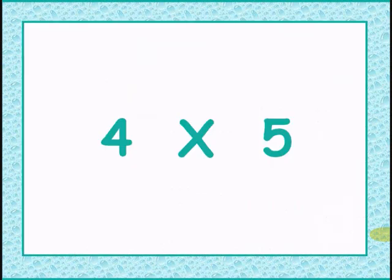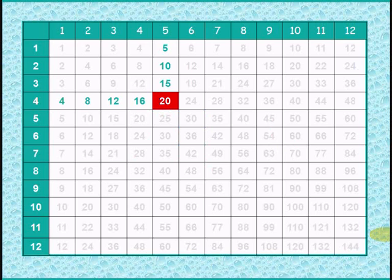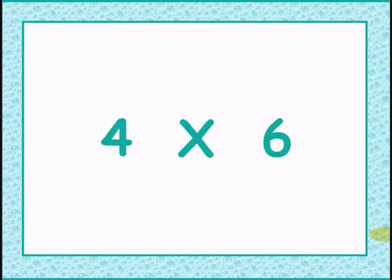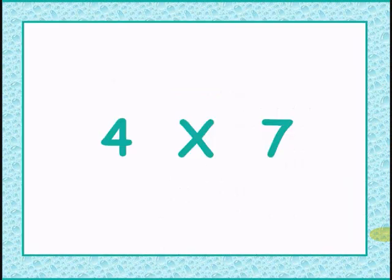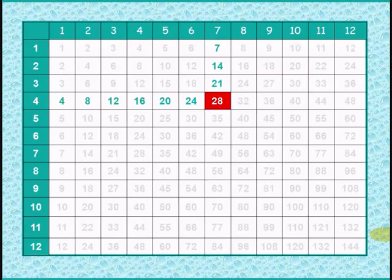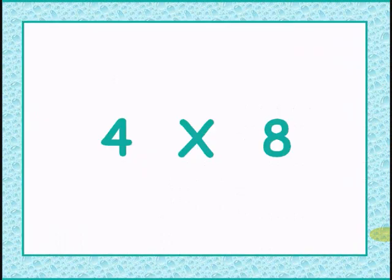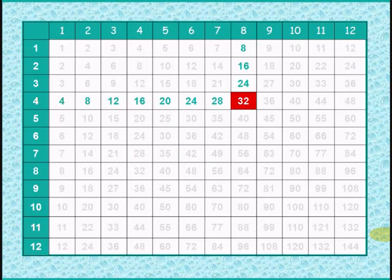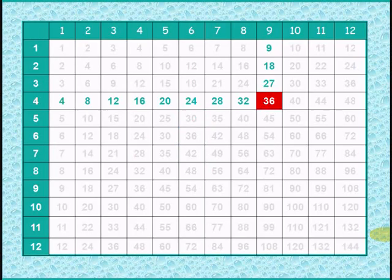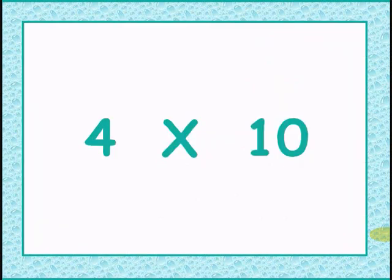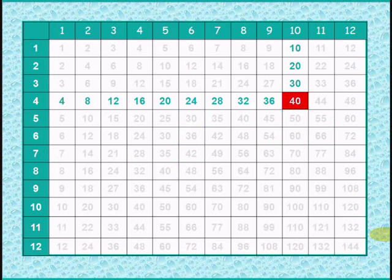Adding 4 times 5 gives 20. Adding 4 times 6 gives 24. Adding 4 times 7 gives 28. Adding 4 times 8 gives 32. Adding 4 times 9 gives 36.